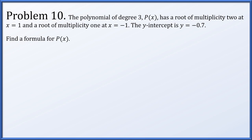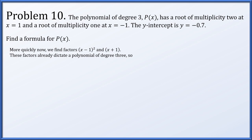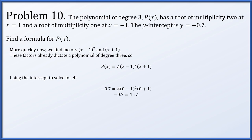Problem 10: degree 3 polynomial with a root of multiplicity 2 at x = 1, a root of multiplicity 1 at x = −1, and y-intercept at y = −7/10. The factors give p(x) = a(x − 1)²(x + 1), which is already degree 3. Setting x = 0, p(0) = −7/10, we solve for a and get a = −0.7. So p(x) = −(7/10)(x − 1)²(x + 1).